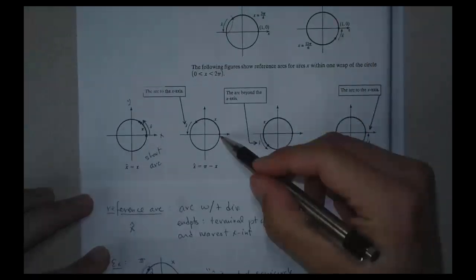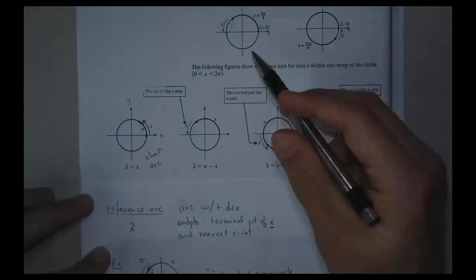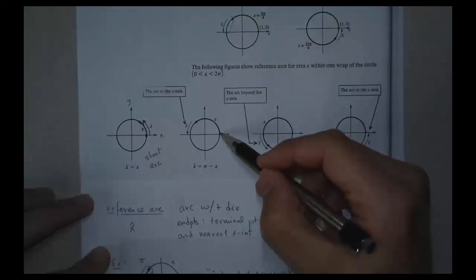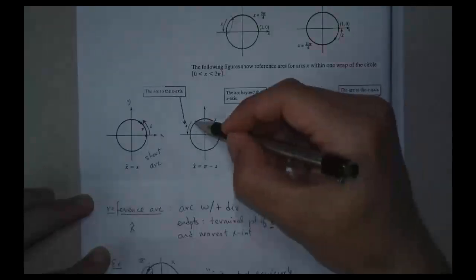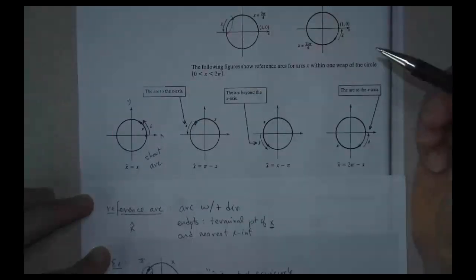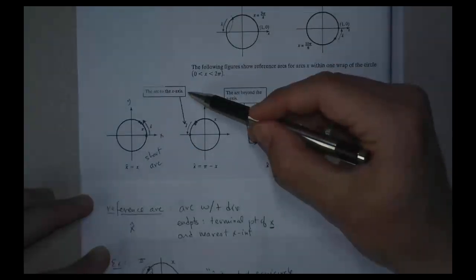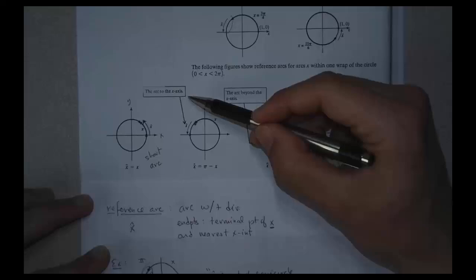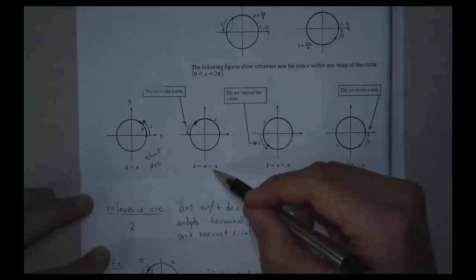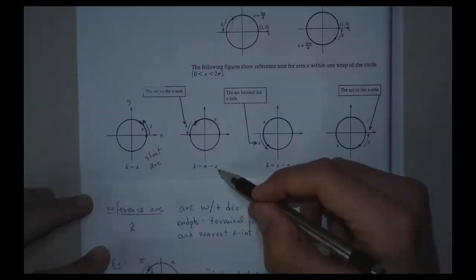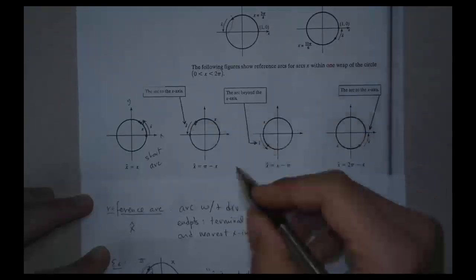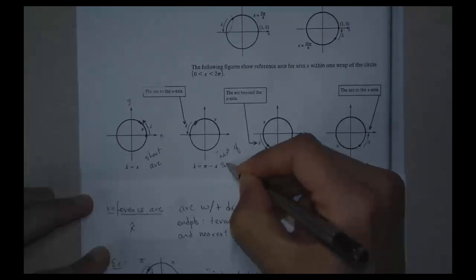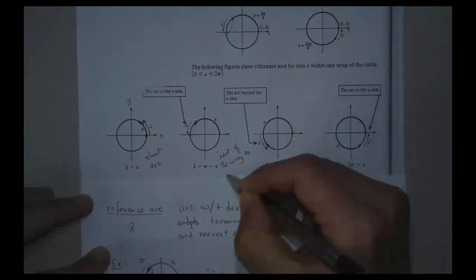This one looks exactly like the example I already worked through. The arc goes in the positive direction, endpoints include the terminal point of x and the nearest x-intercept. I've already found x-hat — it says the arc to the x-axis, so that's how I get to the x-axis. It's the rest of the semicircle, and its length is π minus x. I already saw that — it's the whole semicircle minus this bit, so it's the rest of the way to the x-axis. That makes sense.